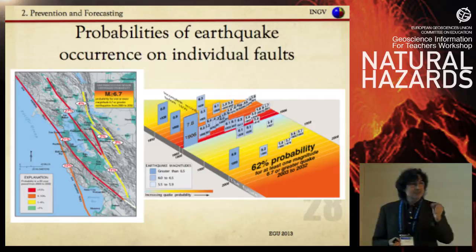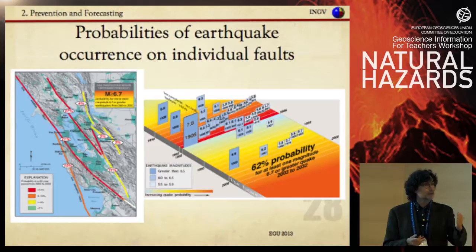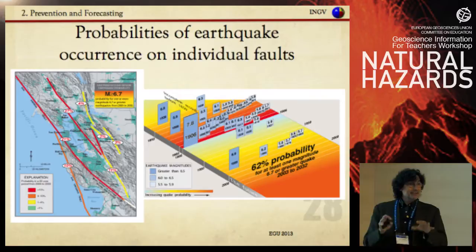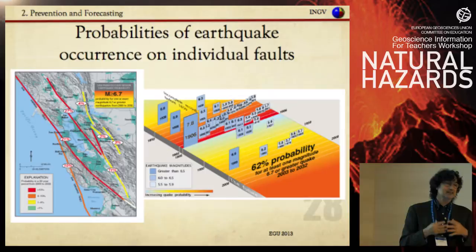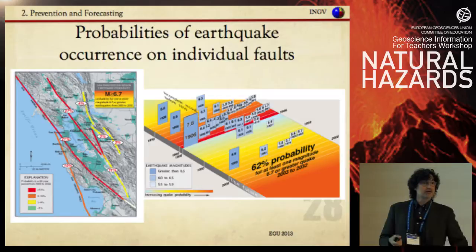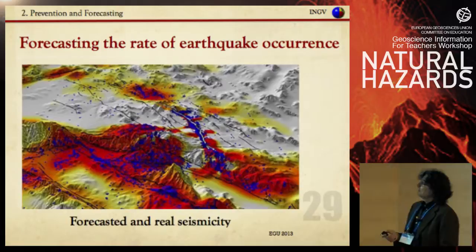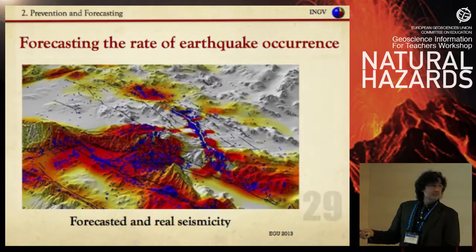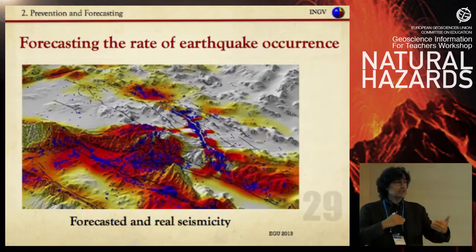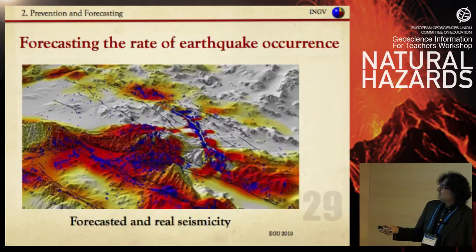These are also attempts to assess the probability of rupture on a single fault — this is for California, where we know it better. But even today, even in California, the possibility to apply these results to real prevention is limited because they only represent 60 percent of the possible danger — most relies on unknown faults. Here is a comparison between real seismicity (blue dots) and predicted/forecasted seismicity, showing that if we know the tectonics, fault geometry, and mechanical state well, we can estimate the rate of earthquake occurrence.